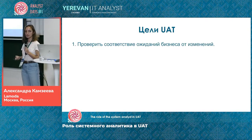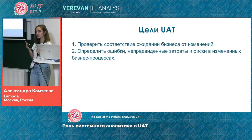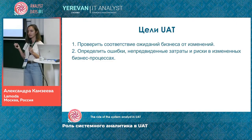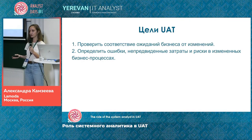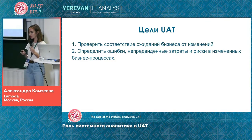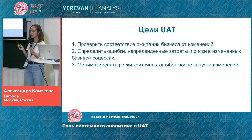Why do we do UAT? To check the expectations of the business with respect to changes, to identify errors, unexpected costs, and risks in the changed business processes. In the billing example, it was clear that there was such a risk and what to do — roll it back, or in some cases accept the new reality and reconfigure manually for a time. And thirdly, UAT minimizes risks of critical errors after the launch of changes.